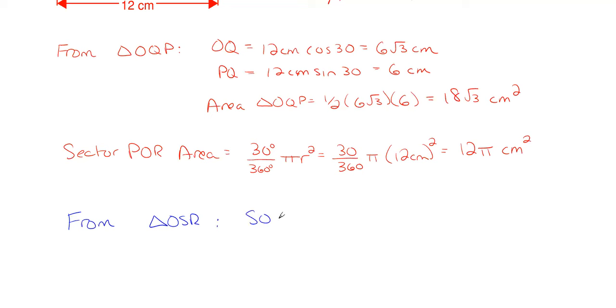So from my white triangle which is OSR that I have to subtract out, my SO dimension which would be my horizontal dimension would be equal to the 12 centimeters cosine of 60 degrees now which gives me 6 centimeters.